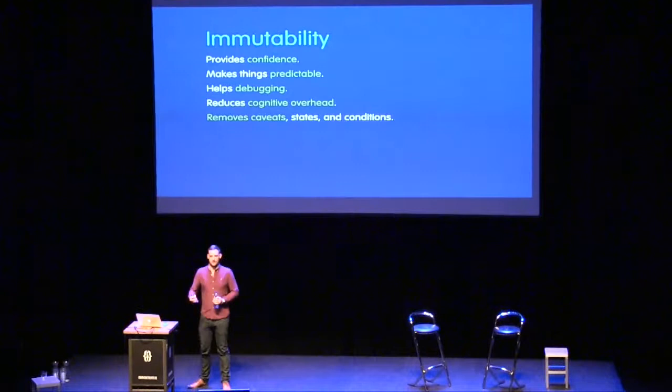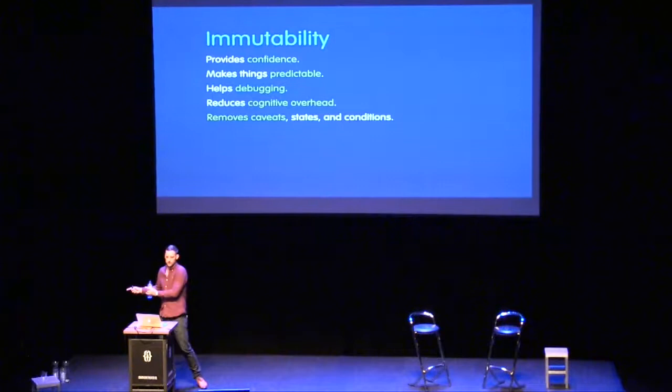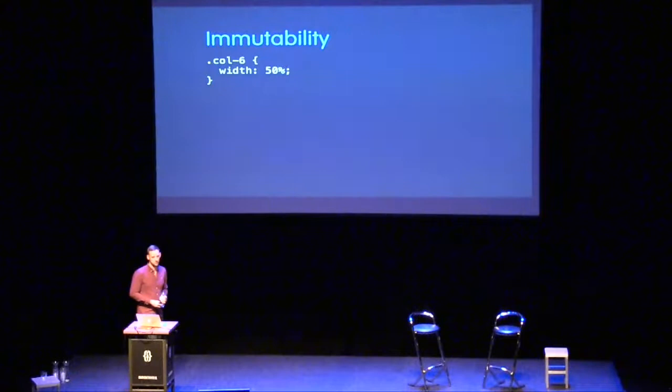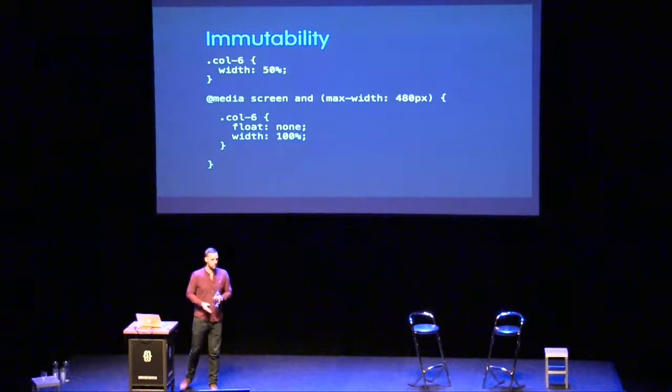This really helps when debugging — if we know one thing is constant and never changes, we don't have to remember different caveats. An example of a mutation in CSS: we've got a grid system with a class of `col6` making something 50% width, and then on a small screen we collapse all columns into one. `col6` is mutated — it's either 50% or 100% depending on how and when we view it. Kind of Schrödinger's CSS.